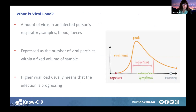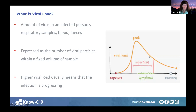Looking at viral load definitions: viral load is the amount of virus in an infected person's sample, whether that be respiratory samples, blood, or faeces. It's expressed as the number of viral particles within a fixed volume of sample. High viral load usually means the infection is progressing. The individual is infected, the viral load increases to a peak usually just before the onset of symptoms — this is the infectious period — and then the viral load drops as the individual recovers.